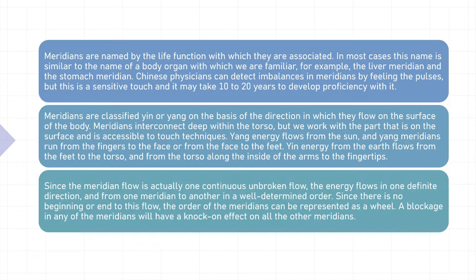Meridians are named by the life function with which they are associated. In most cases, this name is similar to the name of a body organ with which we are familiar — for example, the liver meridian and the stomach meridian. Chinese physicians can detect imbalances in meridians by feeling the pulses, but this is a sensitive touch and it may take anywhere from 10 to 20 years to really develop proficiency with this method of detecting imbalances.